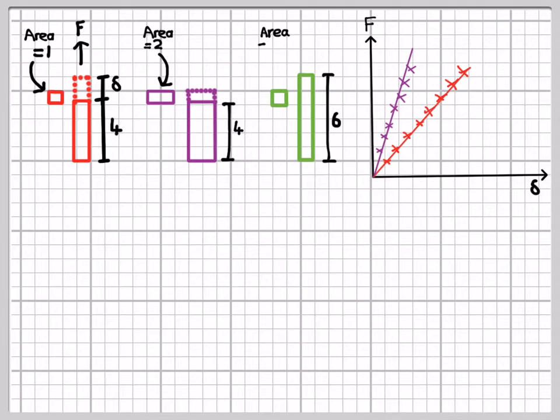If we then took a third piece of the same material, and this time a piece that was a bit longer, say six units rather than four, but with a cross-sectional area of one unit again, then we'd get a third plot in our diagram because the longer sample means that we need to apply a lower force to get the same deflection.